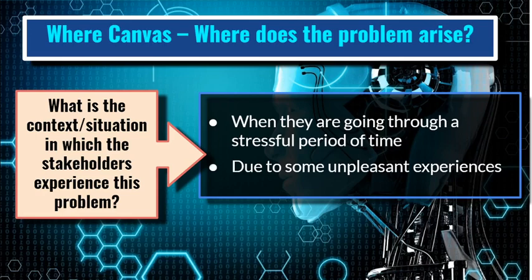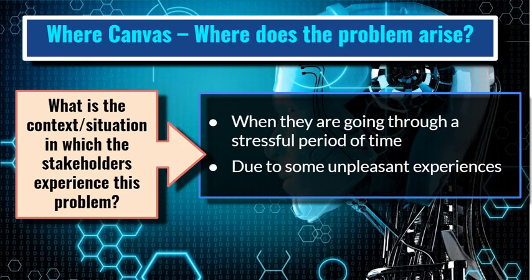The next canvas is 'Where'. Where does the problem arise? We need to answer: what is the context or situation in which the stakeholders experience this problem? The answer is: when they are going through a stressful period of time or due to some unpleasant experiences they face the problem. This is the answer of the Where canvas.